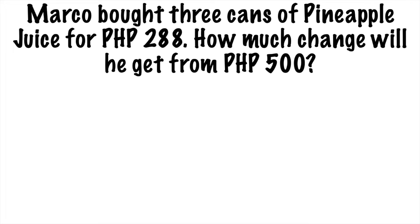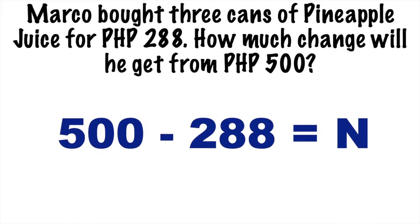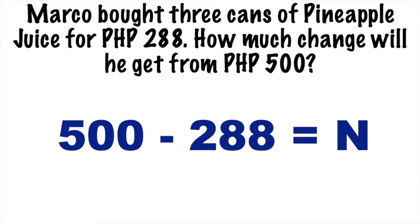So look at this example. Marco bought 3 cans of pineapple juice for 288 pesos. How much change will he get from 500 pesos? In order to solve this, we will have this equation: 500 minus 288 equals N. As you can see, in our minuend we have zeros, and we cannot subtract 8 from zero. That's why we're going to have subtraction with zero difficulty.